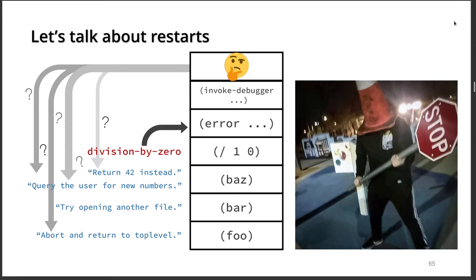For example, with an operation that divides 1 by 0, we might want to return 42 instead. Or if 42 is not valid, we can query the user for new numbers via a pop-up UI window or keyboard input, and then either return them or try performing division on those again. If the input was from some kind of file, we could try opening another file instead. Or in case everything is terrible, we can just abort to the top-level loop, where we can try executing some other program or modify our program and continue executing it. There are lots of choices.